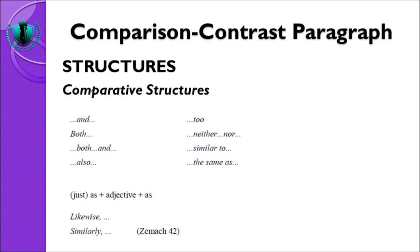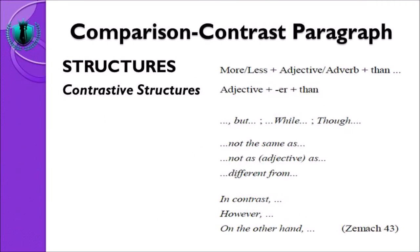Untuk struktur paragraf yang contrast, kita bisa melihat adanya contrastive structures. Kita bisa menggunakan pola: more or less ditambah adjective atau adverb ditambah than, atau adjective plus -er plus than. Contoh lainnya menggunakan kata: but, while, though, not the same as, not as adjective as, different from. Untuk di awal kalimat, kita bisa menggunakan: in contrast, however, dan on the other hand.